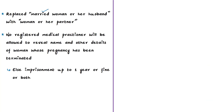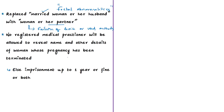The bill also replaces the term 'married woman or her husband' with 'woman or her partner' to support women who got pregnant as a result of failure of a device or method used by them. The upper limit of 24 weeks will not apply in case of substantial fetal abnormalities, which will be diagnosed by a medical board constituted by respective state governments. To protect the privacy of the woman, no registered medical practitioner will be allowed to reveal her name and particulars; contravening this provision is punishable with imprisonment up to one year or a fine or both.